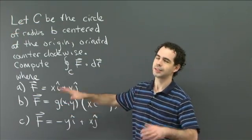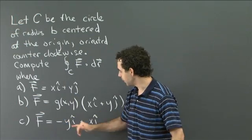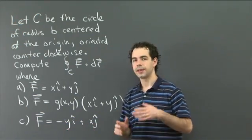You can assume it's a continuous, differentiable, nice function. And in the third one, f is minus yi plus xj.